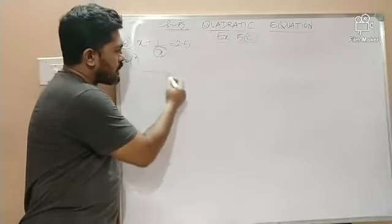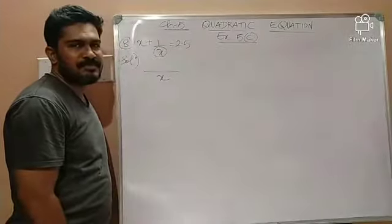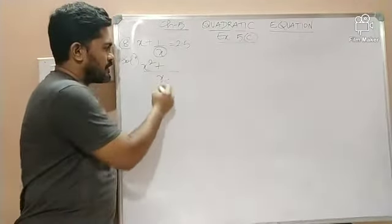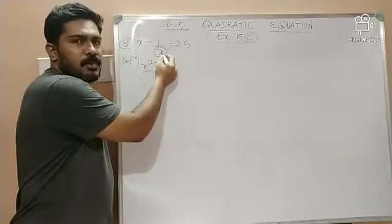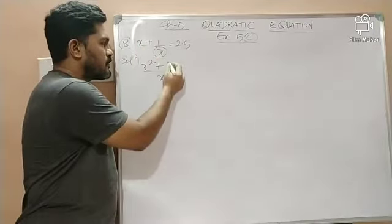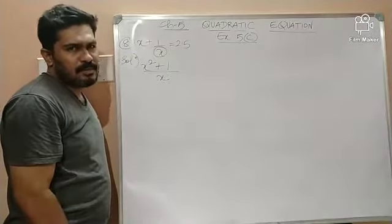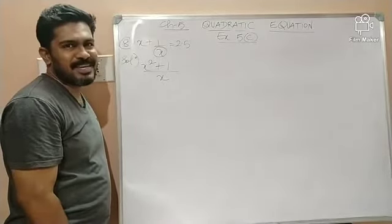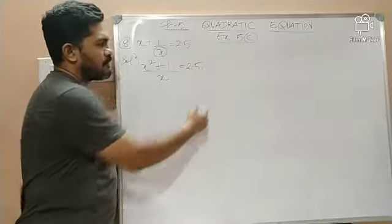What will be the LCM on the left hand side? x. Now, x into x is what? x square plus x divided by x is what? 1 and 1 into 1 is what? 1 itself, the normal LCM method children, nothing new. Okay, which is equal to 2.5.